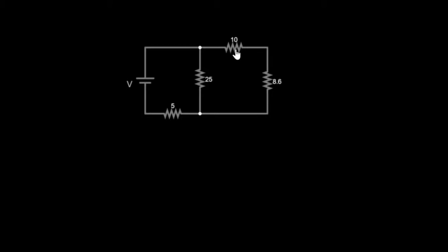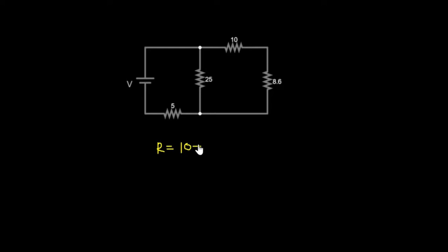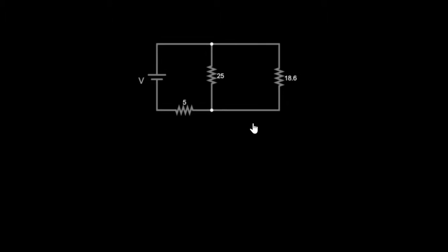Simplifying the circuit now, we still have the 10 ohms, 25 ohms, and 5 ohms resistors, but we have replaced the 15 ohms and 20 ohms with 8.6 ohms. From here we can see that the 10 ohms and the 8.6 ohms are in a series connection, so we add them: 10 plus 8.6 equals 18.6 ohms.